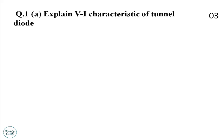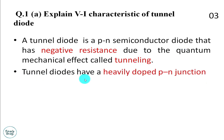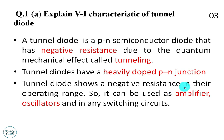Question 1 is a compulsory question. Question 1A states: explain the VI characteristic of a tunnel diode. This question is for 3 marks. A tunnel diode is a PN junction semiconductor diode that has negative resistance due to a quantum mechanical effect called tunneling. The tunnel diode has a very heavily doped PN junction and shows negative resistance in its operating range, making it widely used in amplifiers, oscillators, and switching circuits.